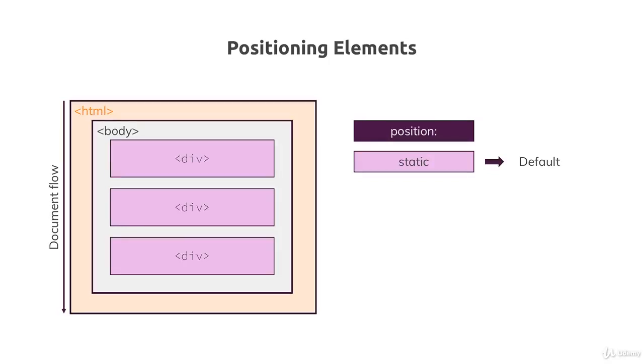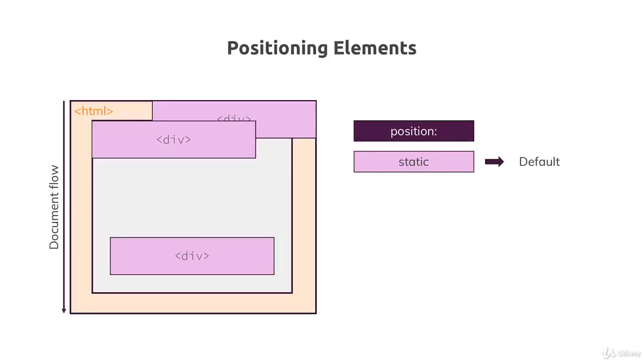There might be situations where you want to change this normal document flow of your elements. For example, you might want to position this first div in the right upper corner of the HTML element, or position the second div in the left upper corner of the body element. These are just examples - you could want to position any element at more or less any position on your website. This is actually possible, but not with this default value.